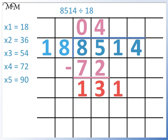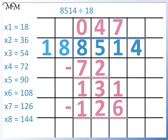We have 131 divided by 18. We need to continue with the 18 times table: 18 times 6 is 108, times 7 is 126, times 8 is 144. 126 is the closest to 131 without going over, so 131 divided by 18 is 7. We subtract 126 from 131 to find the remainder — you can use column subtraction if you wish; otherwise we can see that there is a difference of 5. We bring down the 4. 54 is in the 18 times table; 54 divided by 18 is 3. So 8,514 divided by 18 is 473.